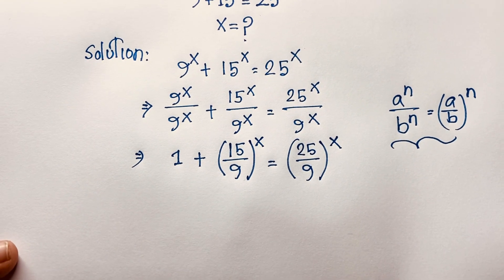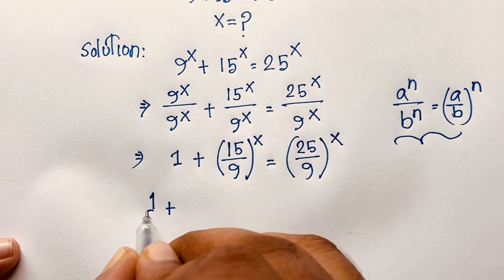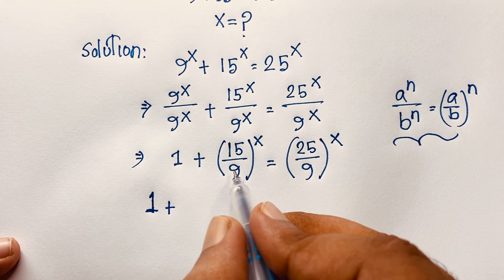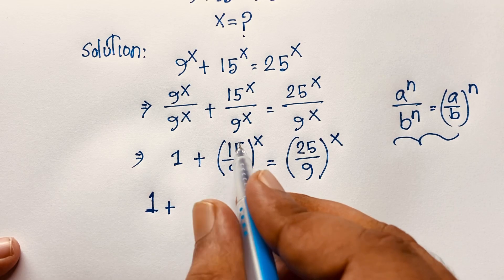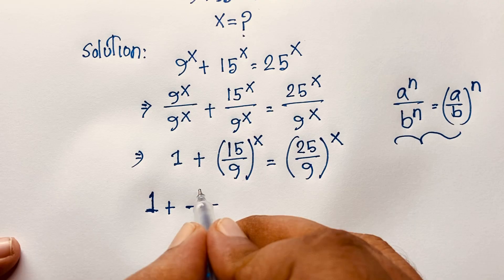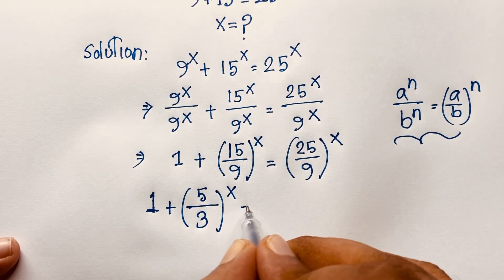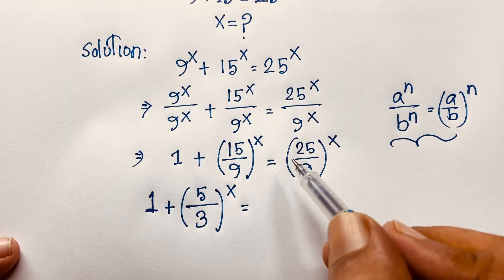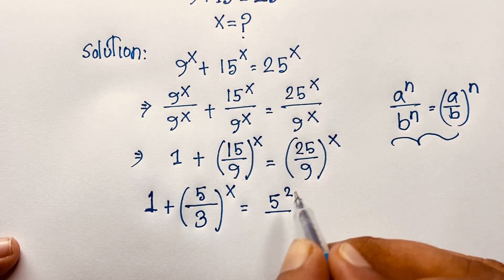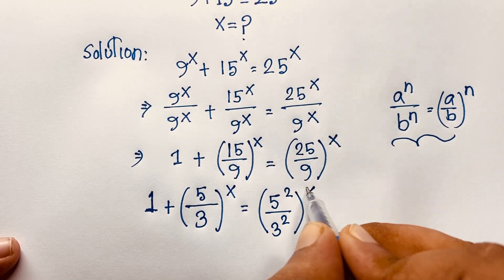So it will be 1 plus (15/9)^x. Now if I simplify 15/9 by dividing both by 3, it will be 5/3, so (5/3)^x. And on the right side, 25/9 is 5² over 3², so it becomes (5/3)^(2x).